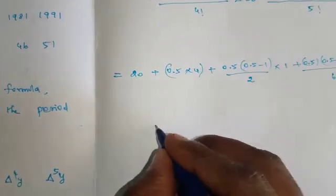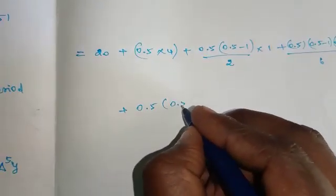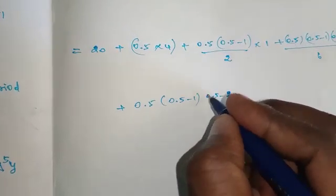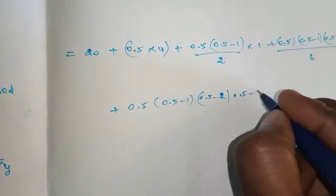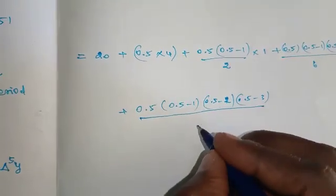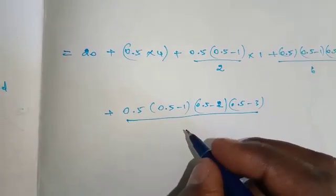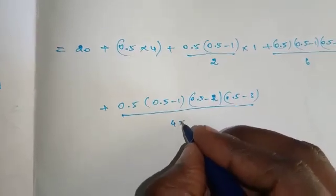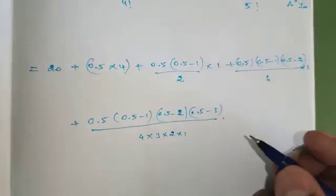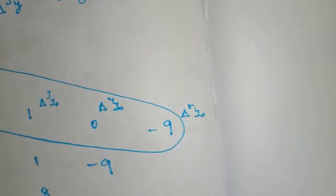Next: plus 0.5 × (0.5 minus 1)(0.5 minus 2)(0.5 minus 3) divided by 4! = 4 × 3 × 2 × 1 = 24, into Δ⁴y₀. Δ⁴y₀ = 0, so this entire term equals 0.